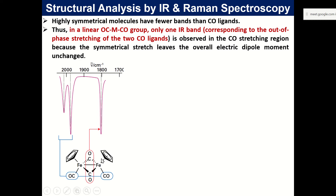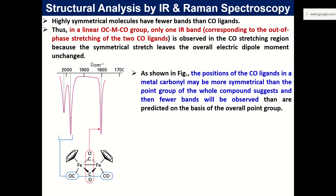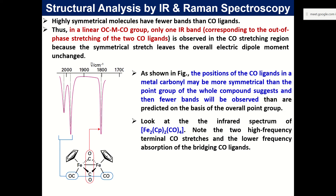So only one band comes through; otherwise two bands were expected for each. The position of the CO ligands - where they are located - may have more local symmetry than the whole molecule itself, and that causes the disappearance of an expected vibrational feature from the IR spectrum.